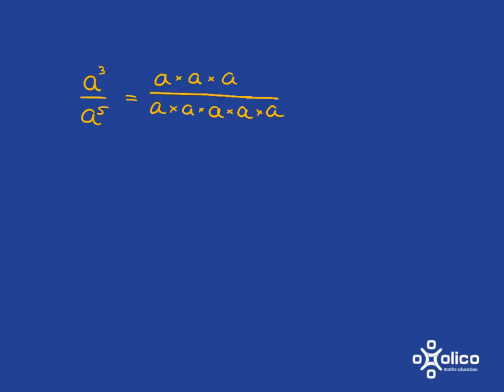In the first way I'm going to go right back to the basics and write out what a cubed is, a times a times a, and what a to the 5 is, a times a times a times a times a. I'm then going to notice that I can cancel like that, and then what I will be left with, at the top I've just got 1, and at the bottom I've got a times a, which is a squared.